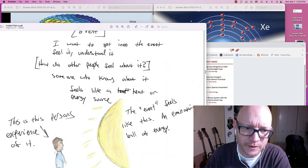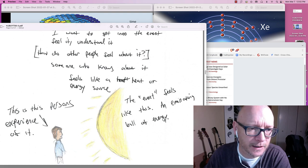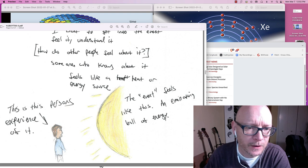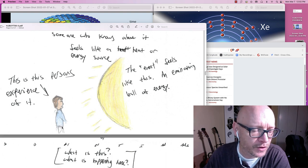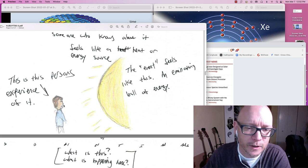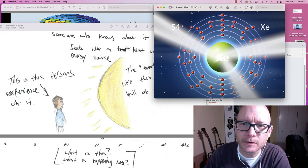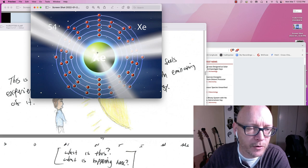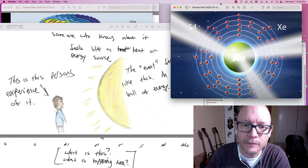How do other people feel about it? I wonder. I had to get myself inside of this feeling. Inside of this understanding. So I wanted to do that via someone involved. Someone who knows about it. The event feels like a heat or an energy source. This is the person's experience of it. So this is the person that I went to explore. The event feels like this. An emanating ball of energy. And I'm thinking it's that. This again being when a weakly interacting particle theorized to be dark matter or dark energy or some other unknown hits one of the xenon particles and an illumination effect takes place.